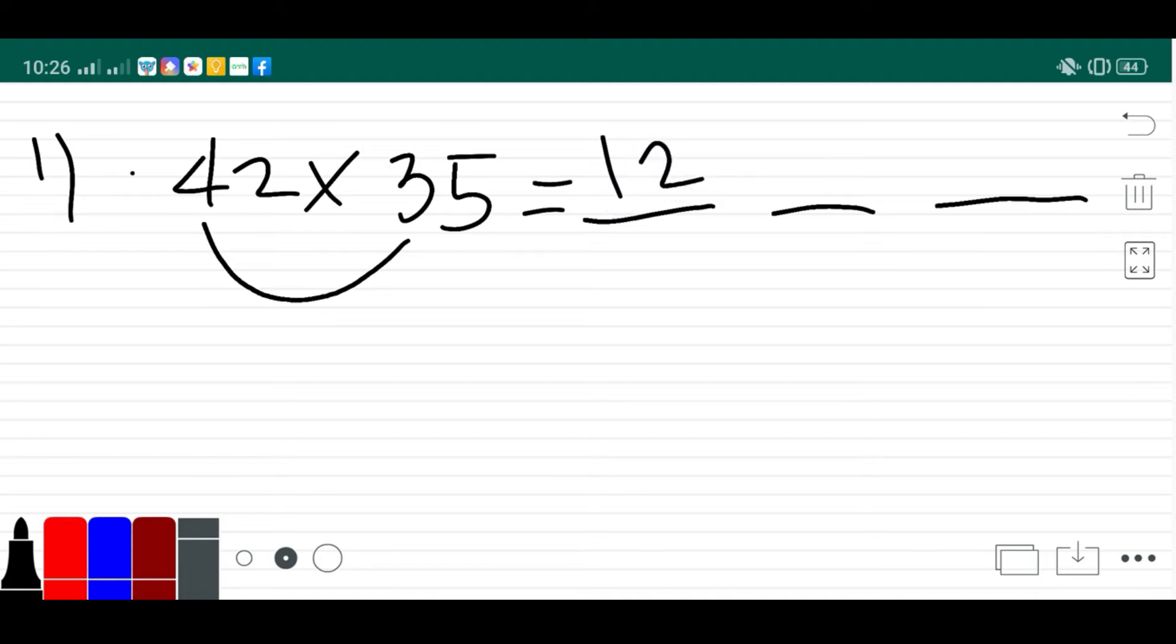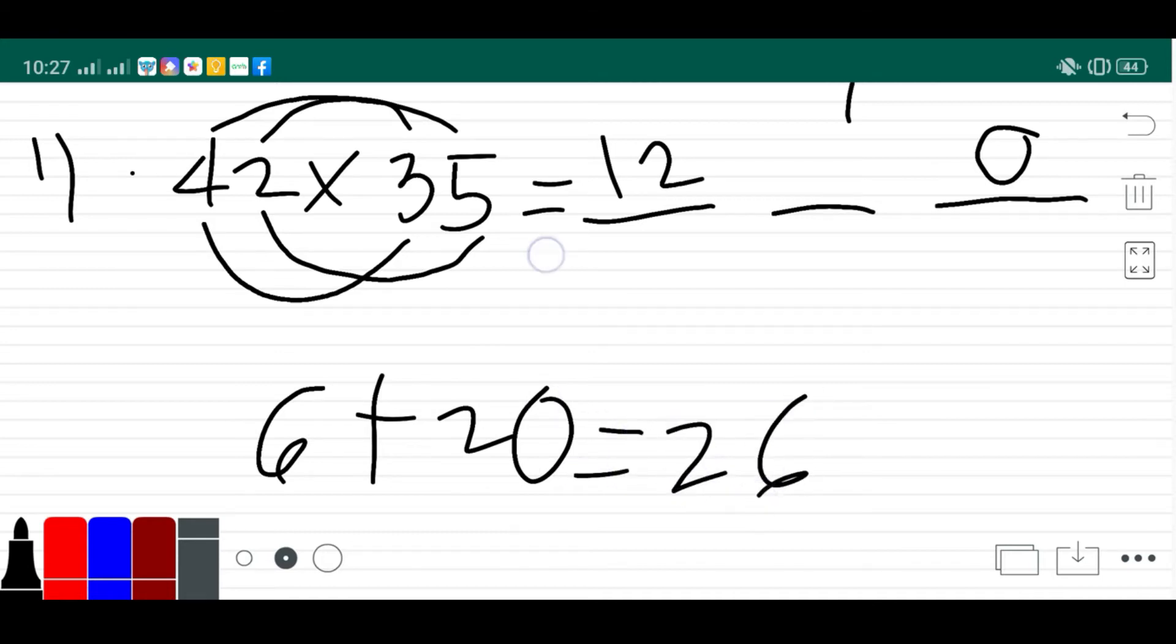And 2 times 5 is 10, but only one digit is allowed in the last line, so we have to carry the 1. And for the number in the middle, let's multiply 2 times 3 plus the multiplication of 4 times 5, which is 20. So 6 plus 20 is 26, so let's put the number 6, carry 2.